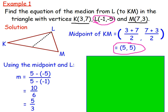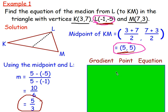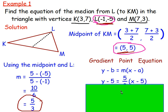You've got the gradient of 5 thirds and you know a point — you can use either (5, 5) or point L since they both lie on the line. Don't use K or M as they don't lie on the median. Using point (5, 5) in y minus b equals m bracket x minus a: y minus 5 equals 5 thirds bracket x minus 5.